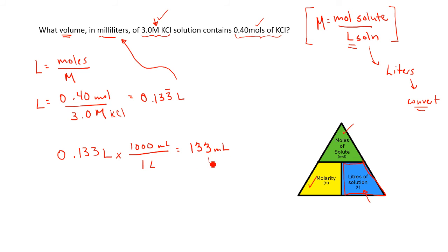If I only want to have two sig figs, I have to reduce this number to only two significant figures, and so I will call it 130 milliliters. So we have to pour out 130 milliliters of this solution in order to get 0.40 moles of KCL.